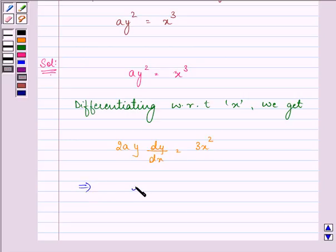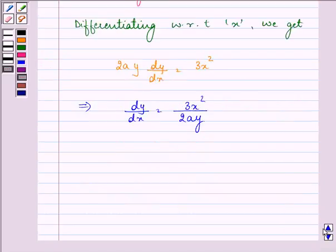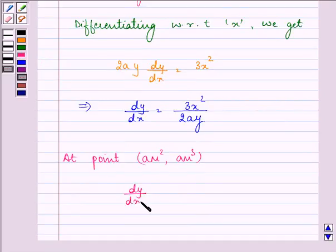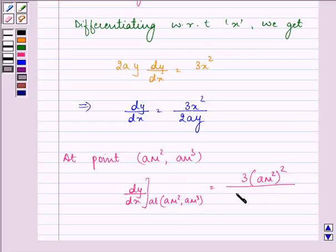This implies we have the value of dy/dx equal to 3x² upon 2ay. Now, at point (am², am³), we have the value of dy/dx equal to 3(am²)² upon 2a(am³).